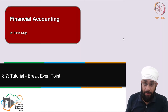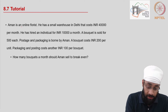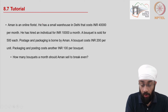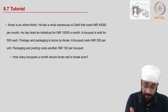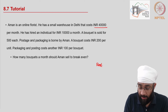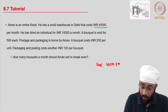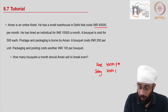One more tutorial to explain break-even analysis with some more details. Aman is an online florist — you place an order on the application and he delivers to you. He has a small warehouse in Delhi with rent of 40,000 per month, and he has hired an individual for a salary of 10,000 per month.